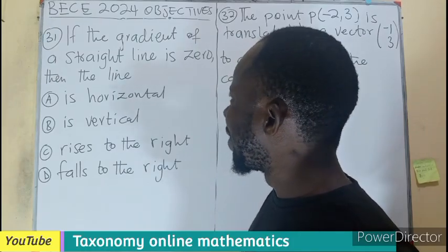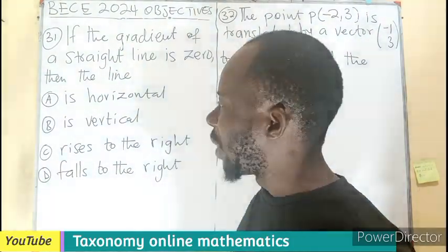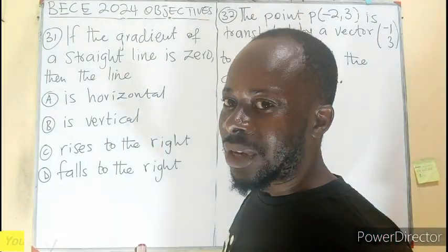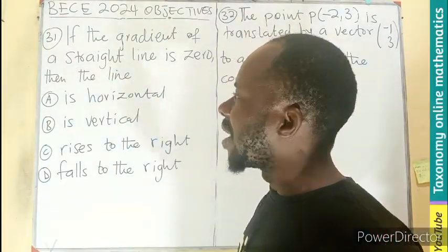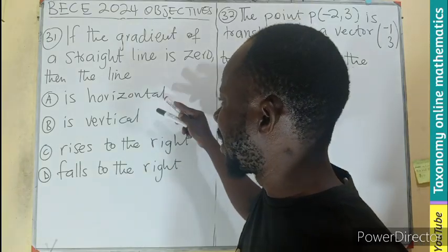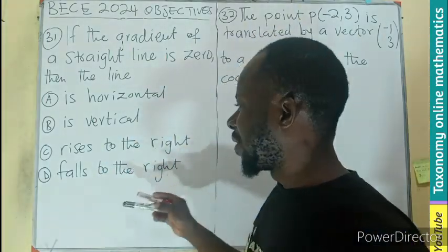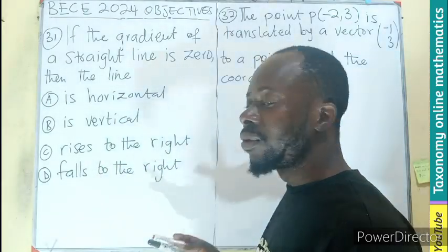If the gradient of a straight line is zero, then the line is what? What type of straight line gives us a zero gradient? Is it a horizontal line, vertical line, or a line that rises to the right, or a line that falls to the right?